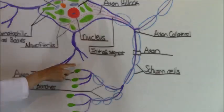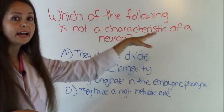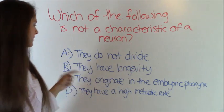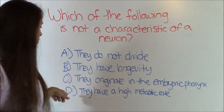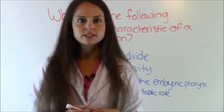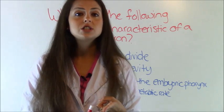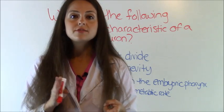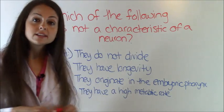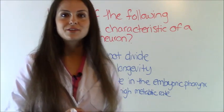Now let's go over a couple quiz questions. Let's see how well you grasp the material of the neuron. Which of the following is not a characteristic of a neuron? Is it A they do not divide, B they have longevity, C they originate in the embryonic pharynx, or D they have a high metabolic rate. Remember at the beginning of the video I went over three special characteristics of a neuron. The first one was that they have a high metabolism. The second was that they have longevity meaning that they last us their whole life, a hundred years. And then three they do not divide, they can never be replaced. So those are the three special characteristics of a neuron. So the answer to this question would be C. That they do not originate in the embryonic pharynx. That is not a special characteristic of it. So our answer is C.